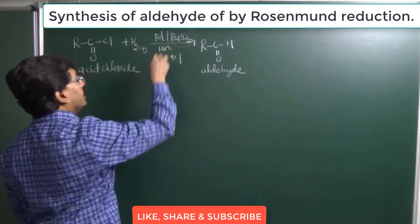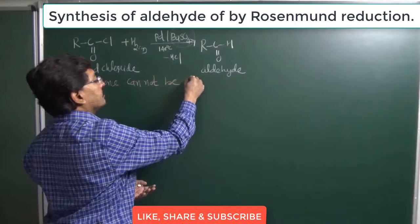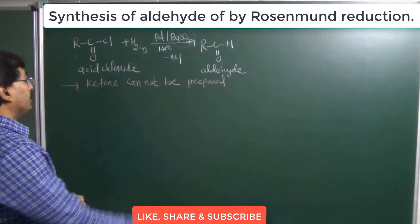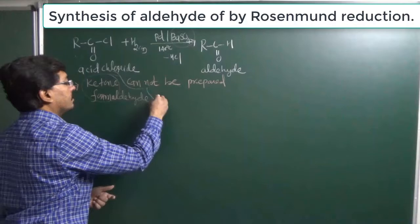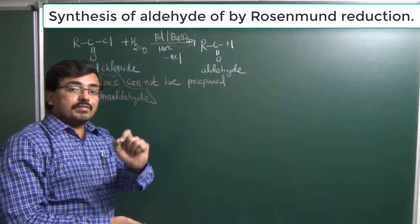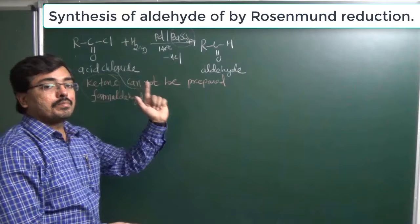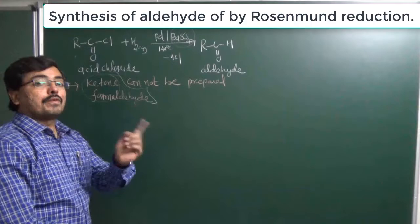The approximate temperature we are using is 140 degrees Celsius. Now there are two important limitations: ketone cannot be prepared by using Rosenmund Reduction Reaction. Similarly, formaldehyde cannot be prepared by this method, because formyl chloride is unstable. So these are the two limitations — first, ketone cannot be prepared; second, formaldehyde cannot be prepared because formyl chloride is unstable.